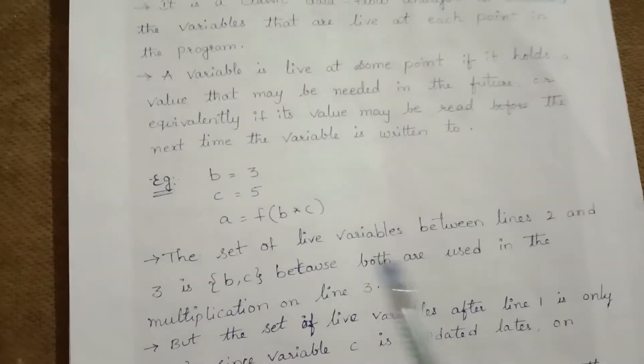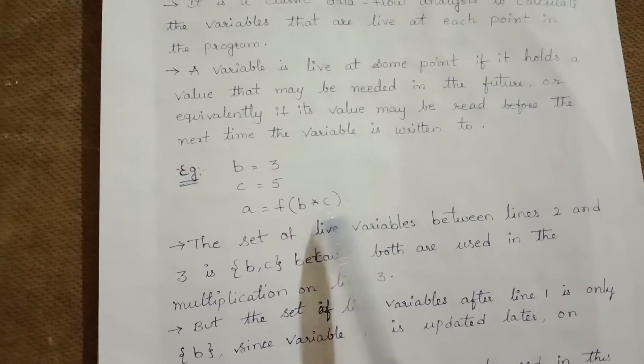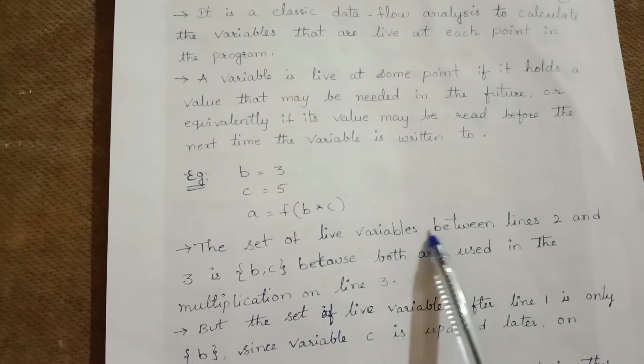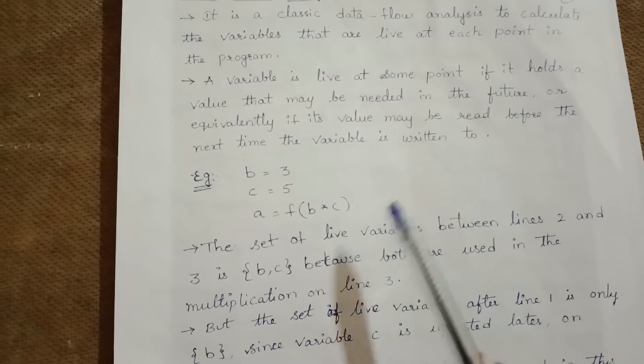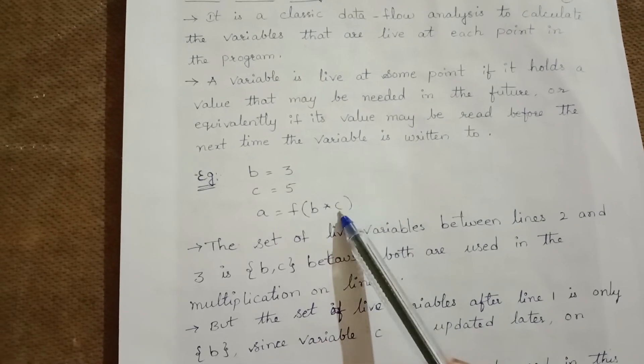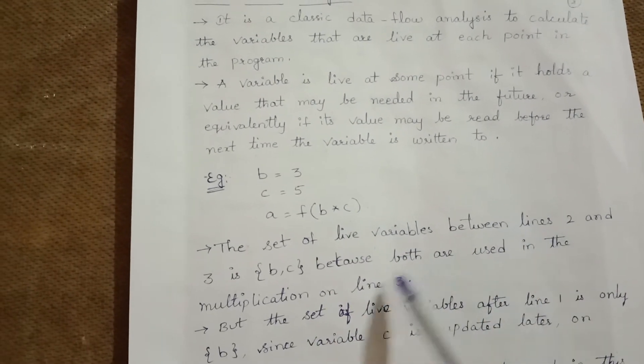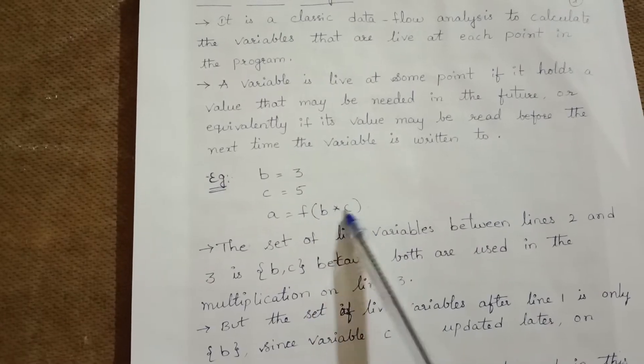For example: b = 3, c = 5, a = f(b × c). The set of live variables between lines 2 and 3 is b and c because both are used in the multiplication in line 3.